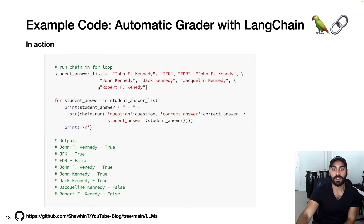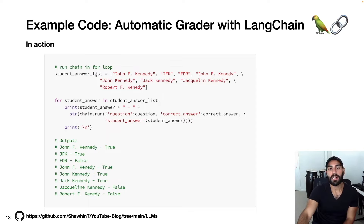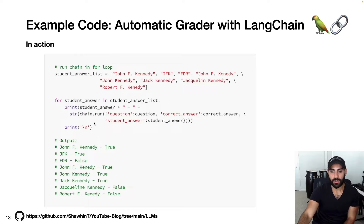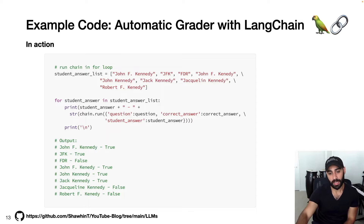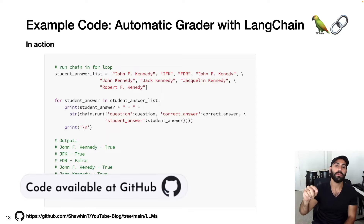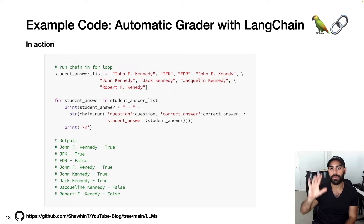Let's see the chain in a for loop with multiple student answers to 'Who was the 35th president?' The student answers tested are: John F. Kennedy, JFK, FDR, John F. Kenedy (one N), John Kennedy, Jack Kennedy, Jacqueline Kennedy, and Robert F. Kennedy. Results: John F. Kennedy — true; JFK — true; FDR — false; misspelled Kennedy — true (misspellings are okay per the prompt); John Kennedy — true; Jack Kennedy — true; Jacqueline Kennedy — false (that was his wife); Robert F. Kennedy — false (that's his brother). The code is available in the GitHub repo linked below.